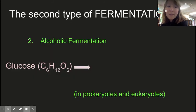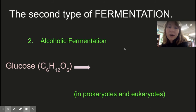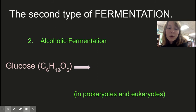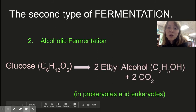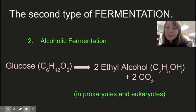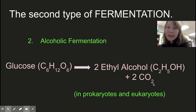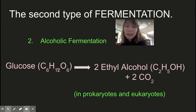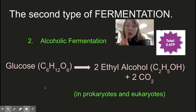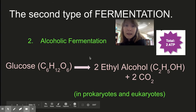The second type is alcoholic fermentation. Remember: two types of anaerobic fermentation — lactic acid and alcoholic. In alcoholic fermentation, glucose is transformed into two molecules of ethyl alcohol (C₂H₅OH, also written C₂H₆O) and two carbon dioxide molecules are released. This reaction breaks some high-energy bonds and releases chemical energy, producing two ATP molecules.